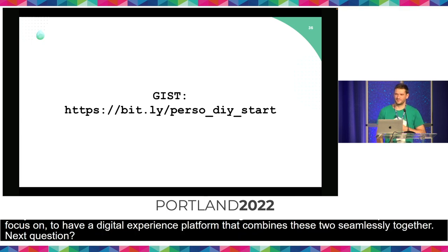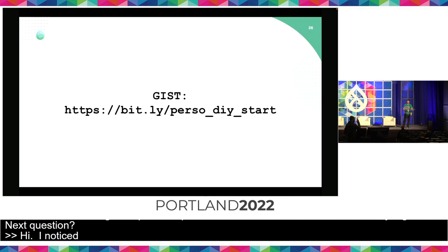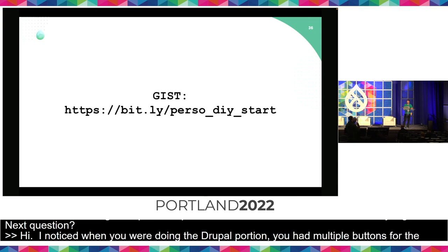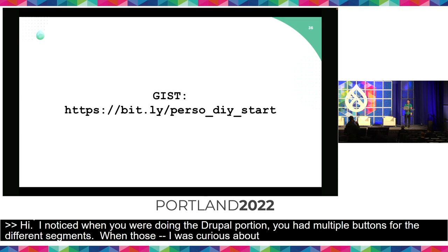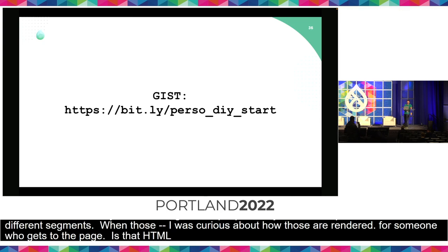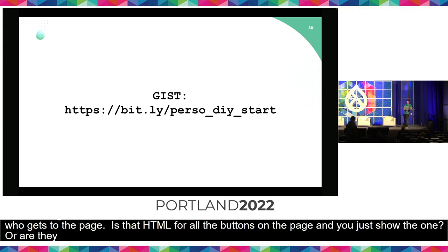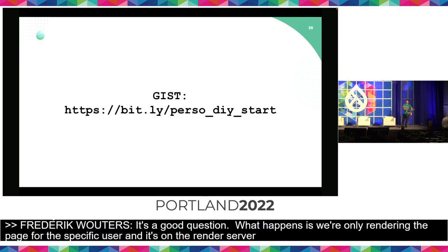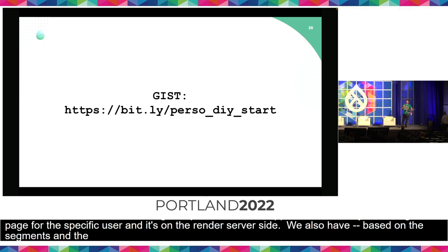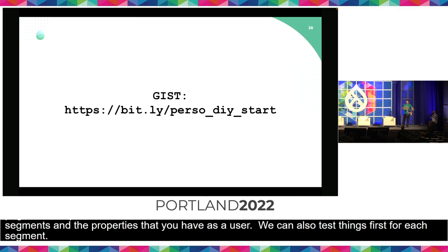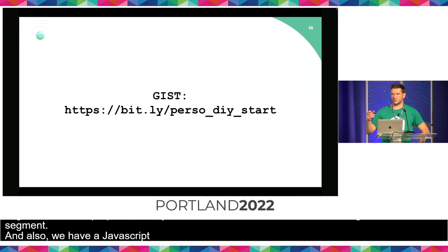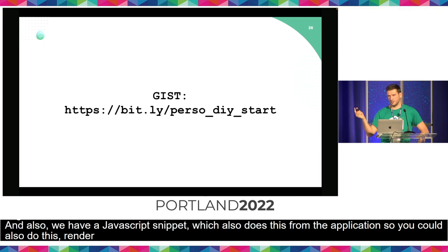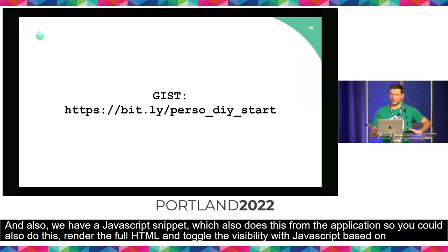I noticed when you were doing the Drupal portion you had multiple buttons for the different segments. I was curious about how those are rendered for someone who gets to the page — is that HTML for all the buttons on the page and then you just show the one? What happens is we're only rendering the page for the specific user and it's going to render server side. We also have a Vary header based on the segments or the properties that you have as a user, so we can also cache these things for specific segments. We also have a JavaScript snippet which does this for front-end applications — you can render the full HTML and then toggle visibility with JavaScript based on the segments you're in.